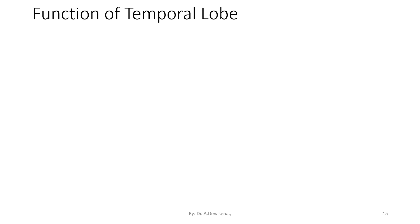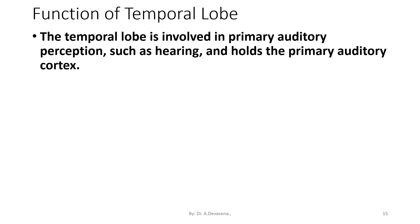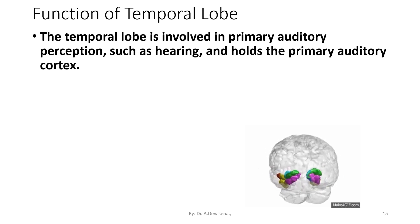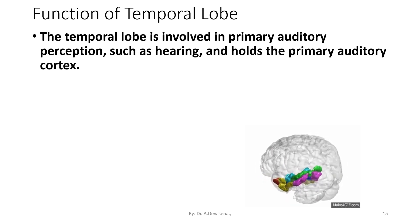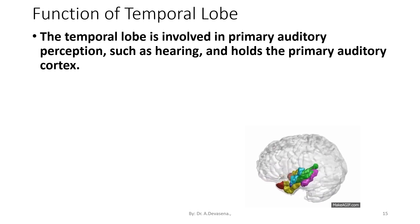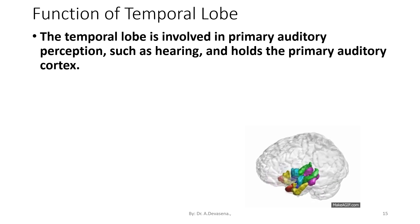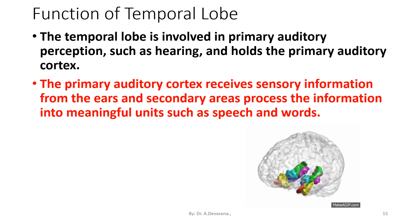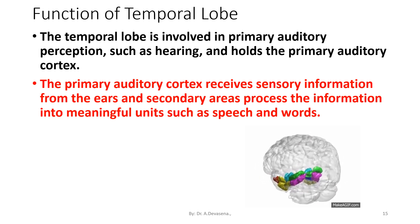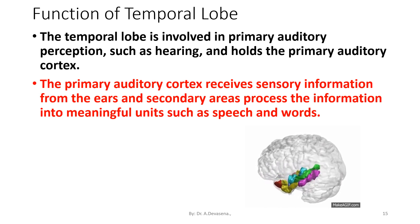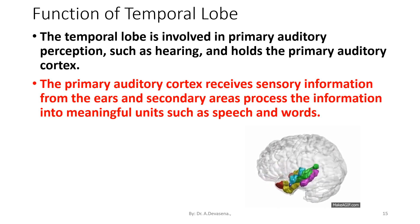Let us see how the sound wave is processed in the human brain. With the help of the temporal lobe, the sound wave is processed. The temporal lobe is involved in primary auditory perception such as hearing, and holds the primary auditory cortex. This temporal lobe is present adjacent to the human ear, inside the human brain. The primary auditory cortex receives sensory information from the ears and processes it into meaningful units such as speech and words.